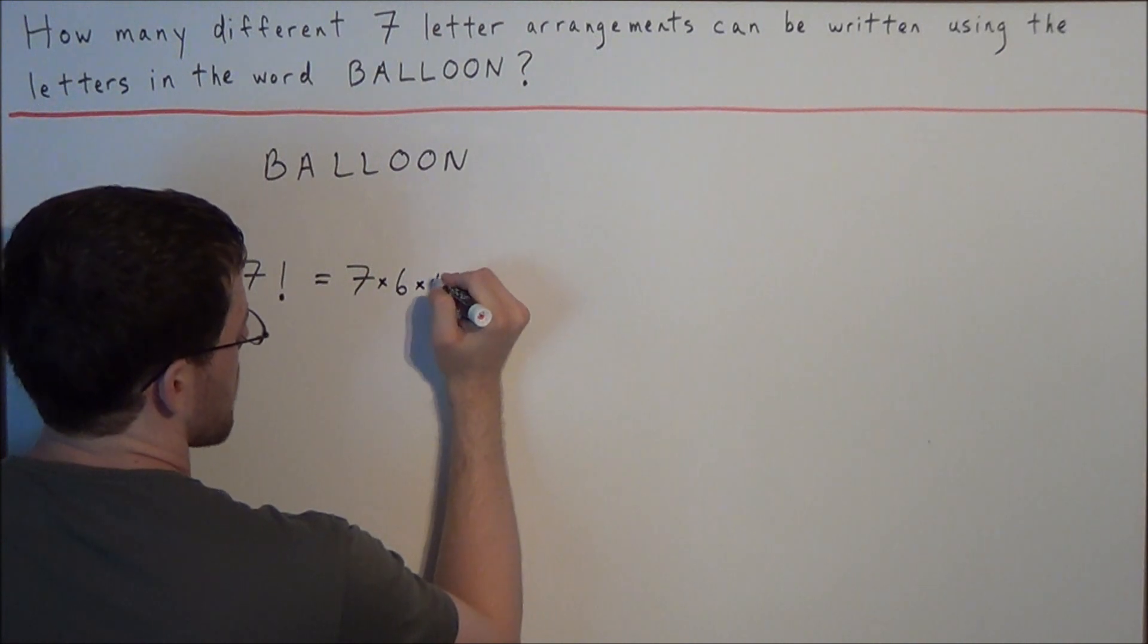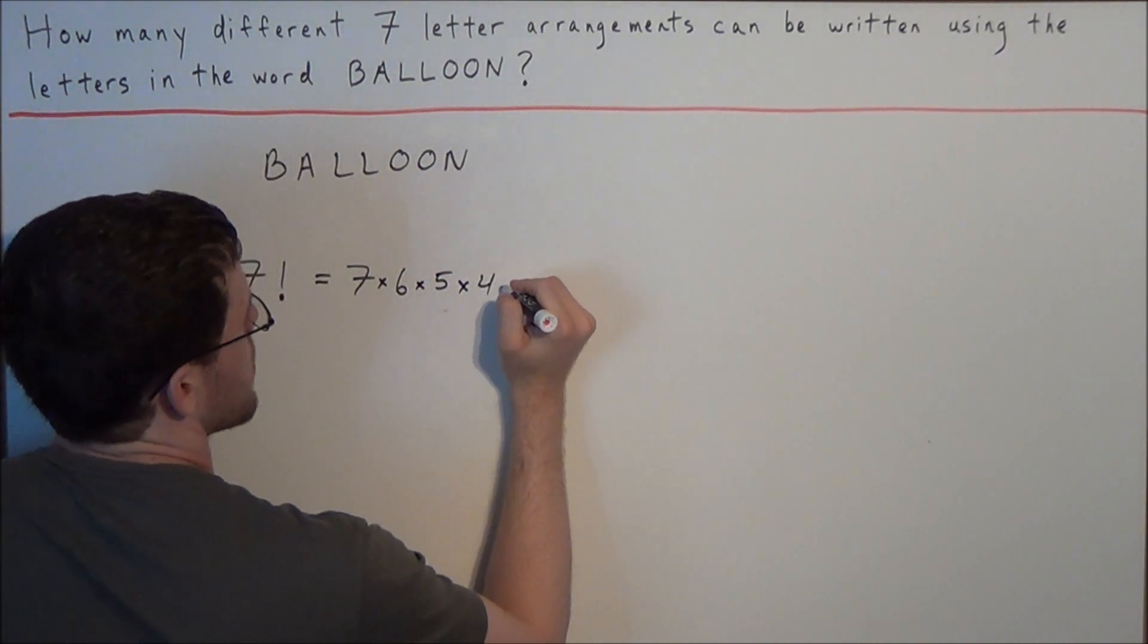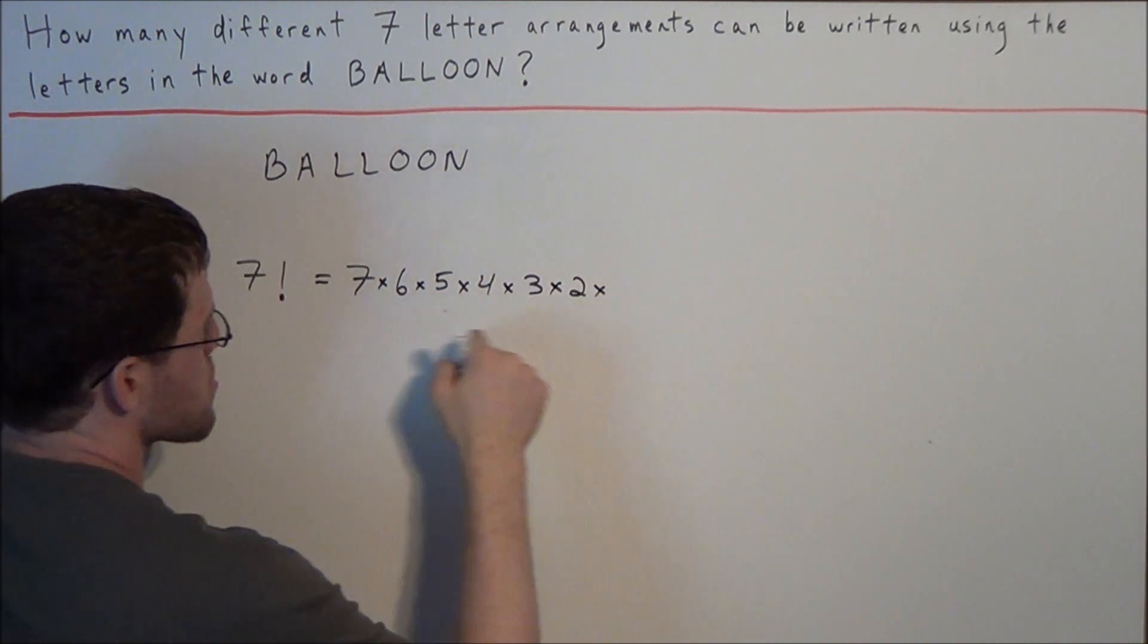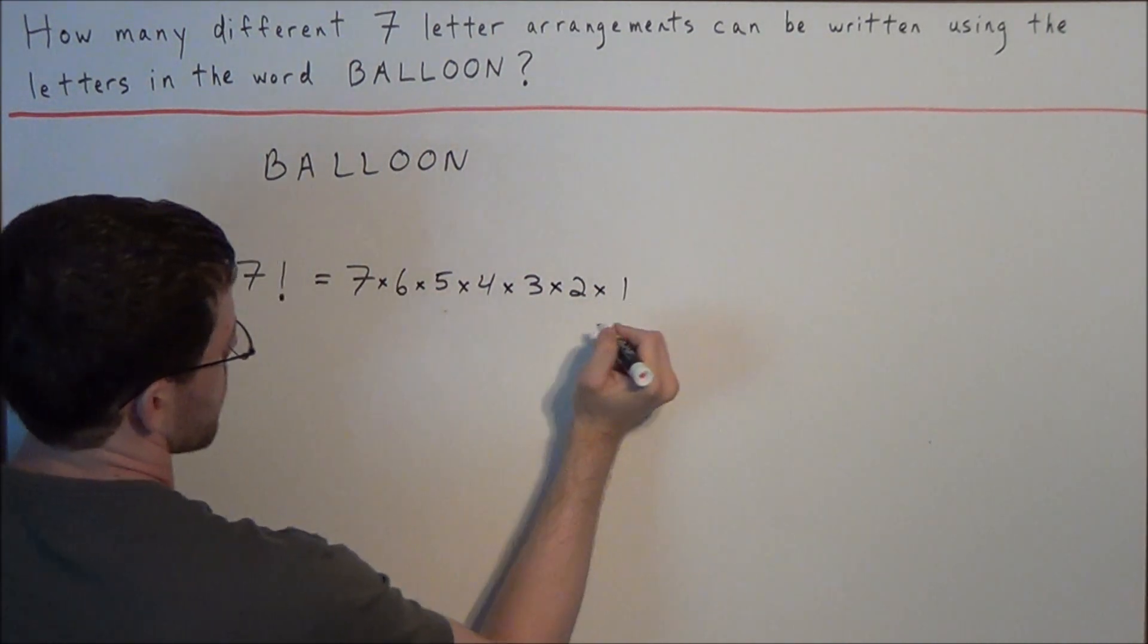Then we have five options for the third, four for the fourth, three for the fifth, two for the sixth, and then after we choose six letters there's only one left so we have one option for the last.